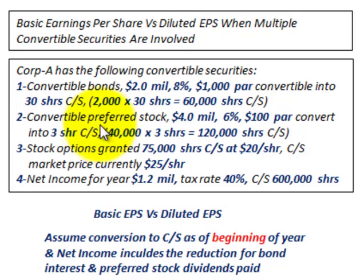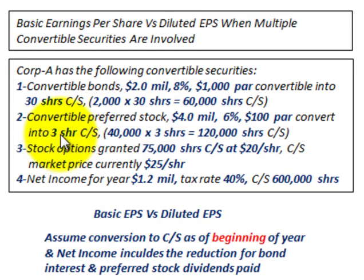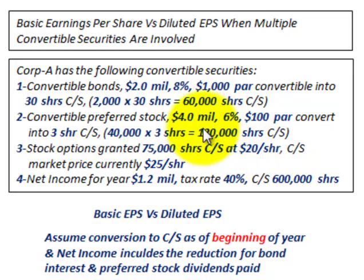They also have convertible preferred stock: $4 million, 6% dividend, $100 PAR. Each $100 PAR amount can be converted into 3 shares of common stock, so the total number of shares that convertible preferred stock can be converted into is 120,000 shares of common stock.